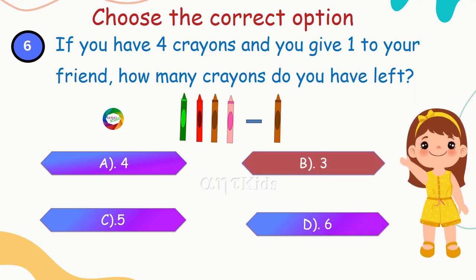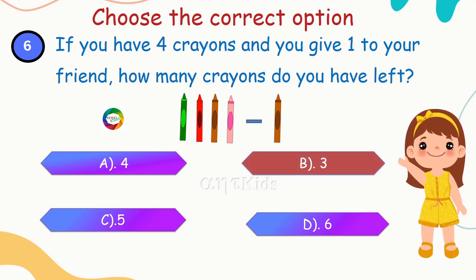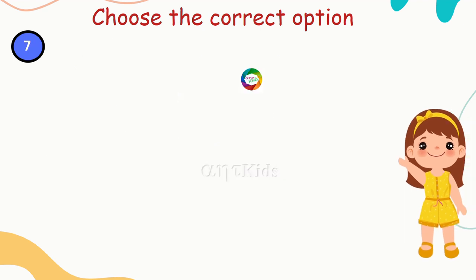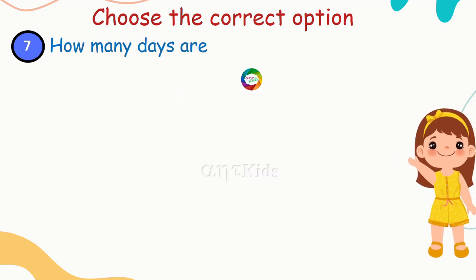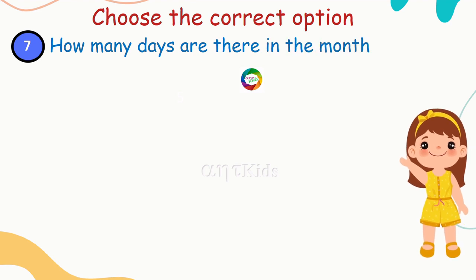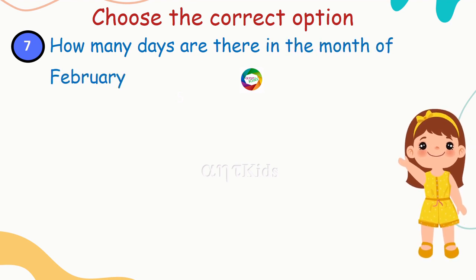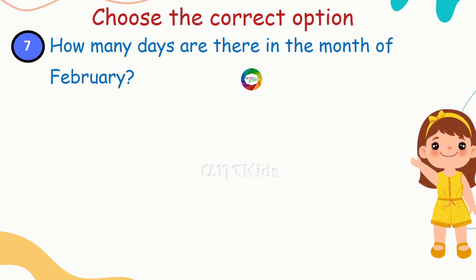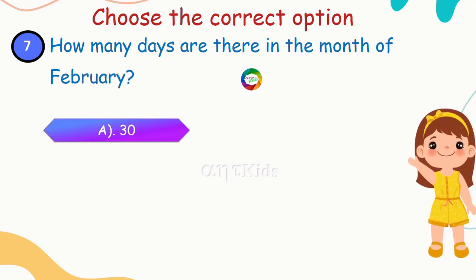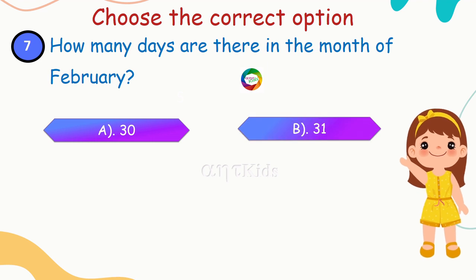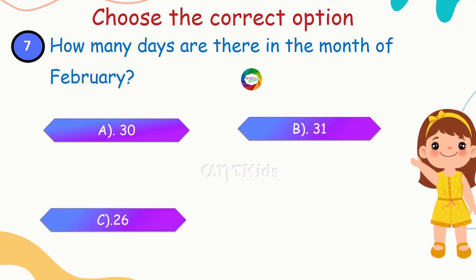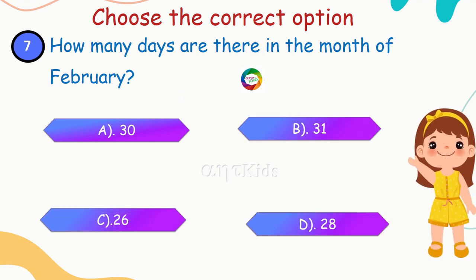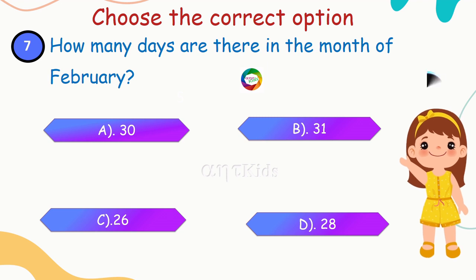Yes, you're right, the answer is three. Next question: how many days are there in the month of February? Options: 30 days, 31 days, 26 days, 28 days.